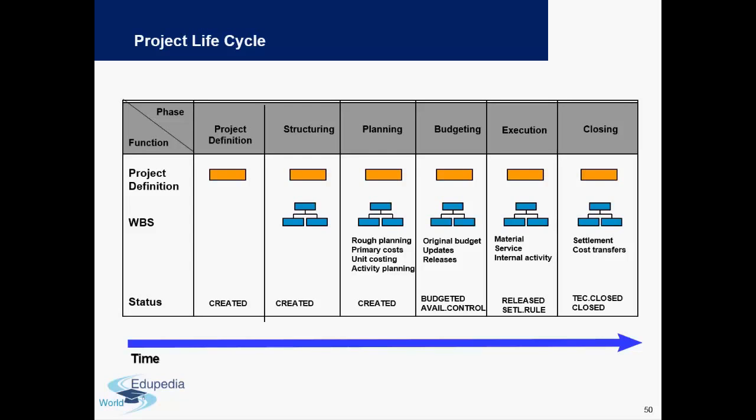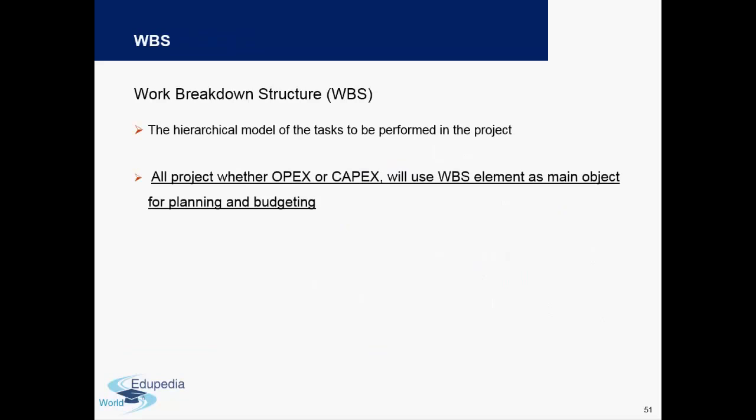There are different functions — for example, project definition which comes under every phase, and WBS which also comes under almost every phase except project definition. You can see the status and timeline at the bottom, where you have your project definition, structuring, planning, budgeted availability control, and the execution phase which covers released settlement rules. This is basically what Project System as a module does, and the Work Breakdown Structures — the hierarchical model of tasks to be performed in the project — are covered under this.